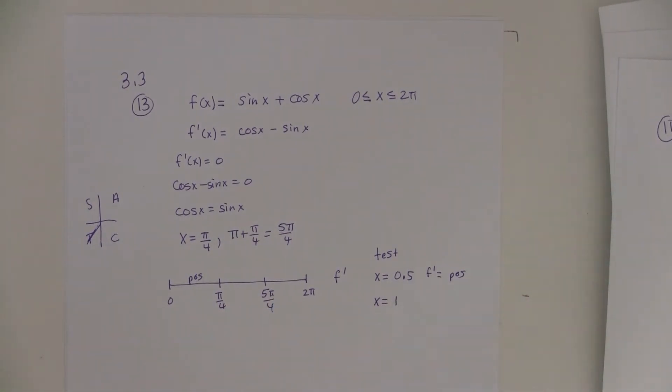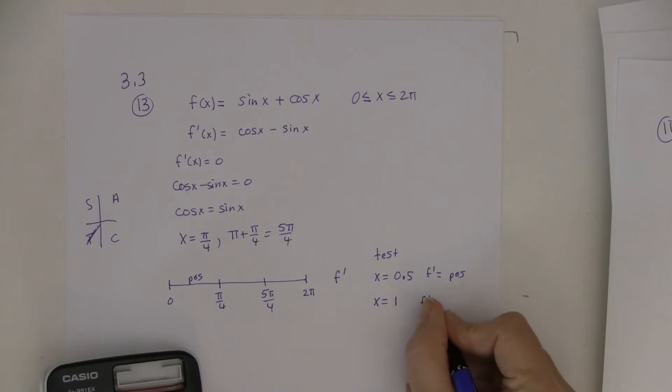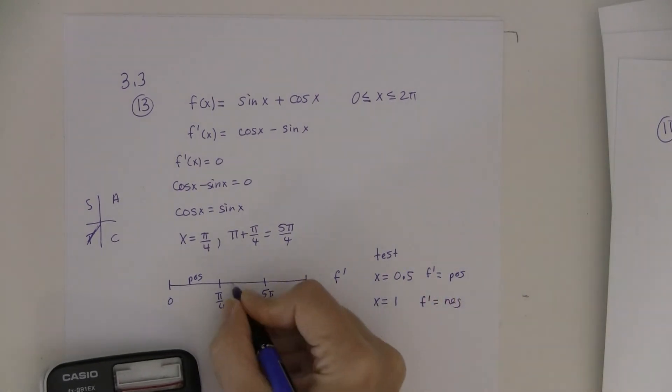So x equals 1. And so I'm going to come over here and I'm going to edit that to be 1. And my calculator is in radians again. And this is negative. That's all I care about.